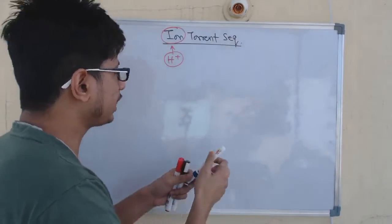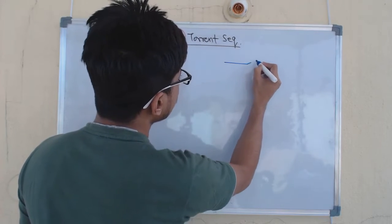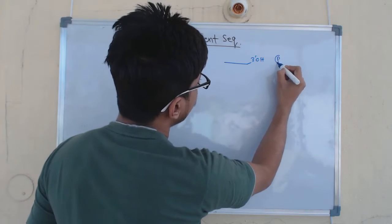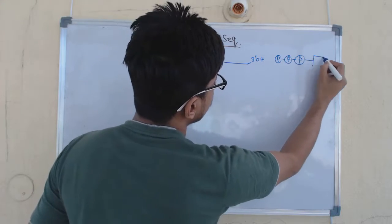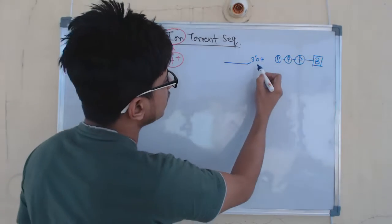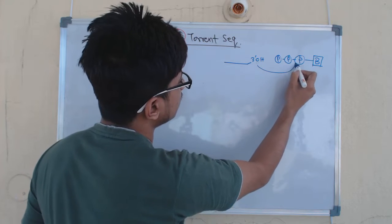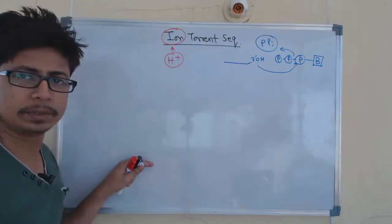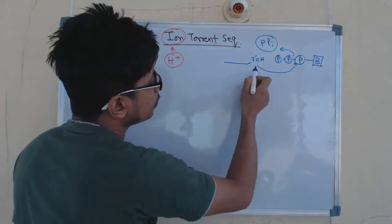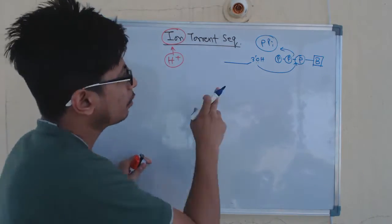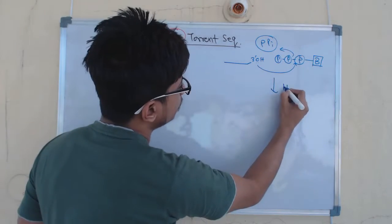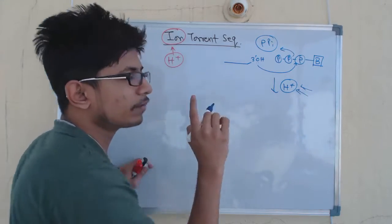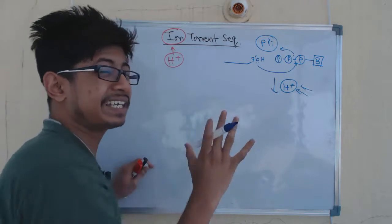From a chemical point of view: if you look at a growing chain of nucleotide sequences, it has a 3' hydroxyl group free to react. Another nucleotide with a triphosphate group comes in, the hydroxyl group attacks the alpha phosphate, two phosphate groups are released as pyrophosphate, and a phosphodiester bond is formed. During this polymerization, a proton — a hydrogen ion — is released. In Ion Torrent sequencing, we detect the generation of these hydrogen ions.